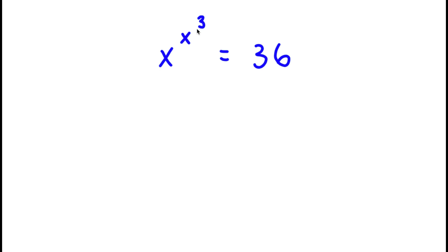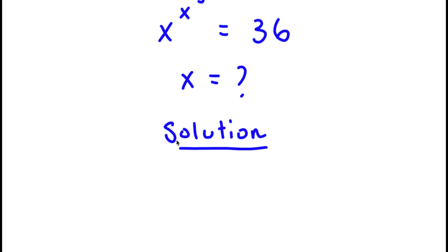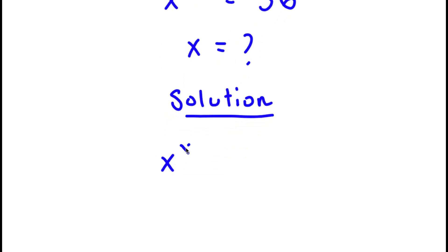In this problem, I have x to the power of x to the power of 3 is equal to 36. I want to find the value of x here. So for my solution, I'll start with x to the power of x to the power of 3 is equal to 36.